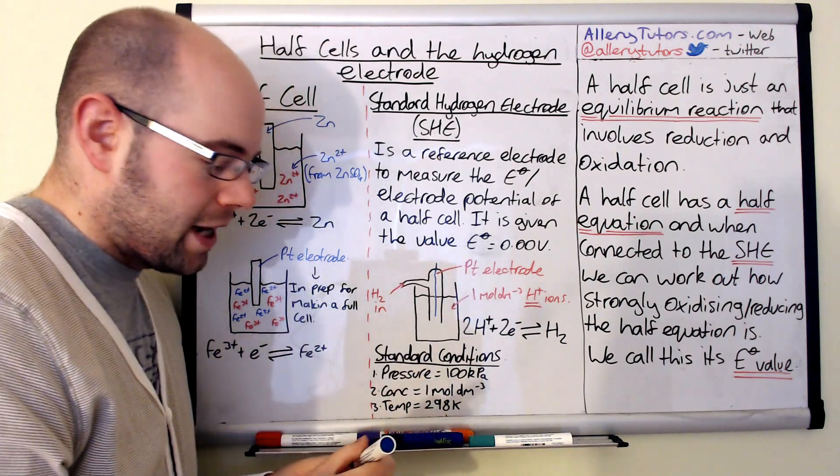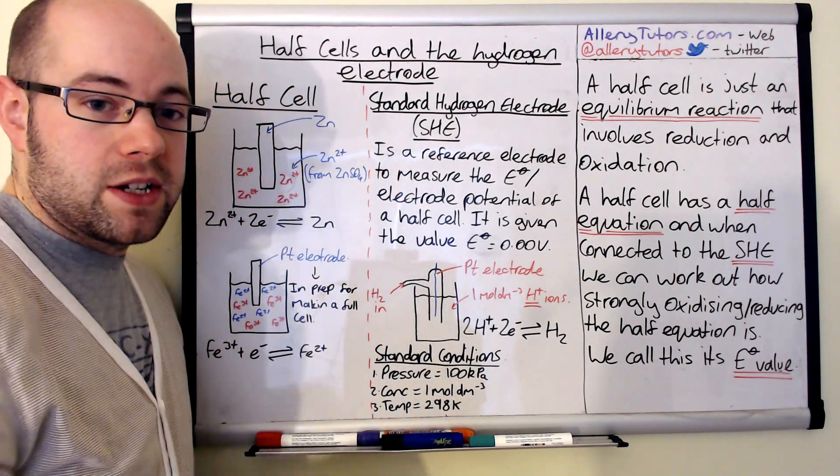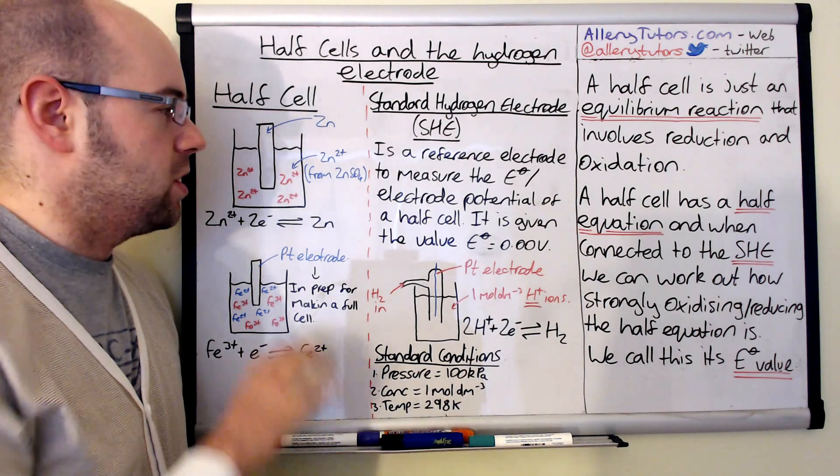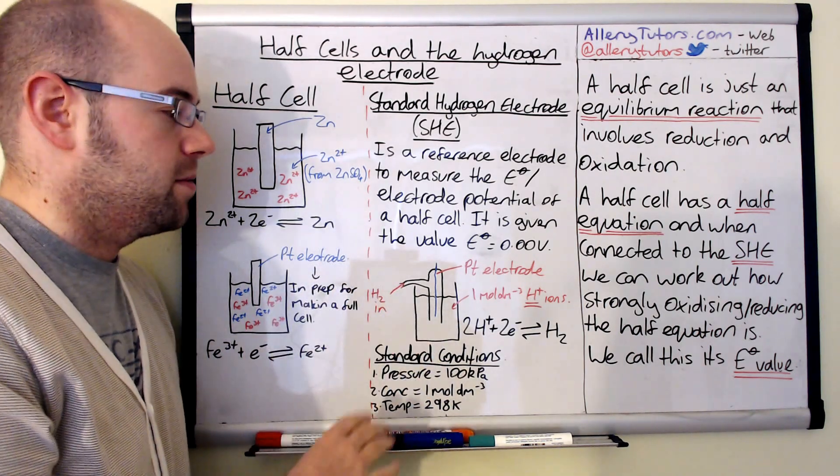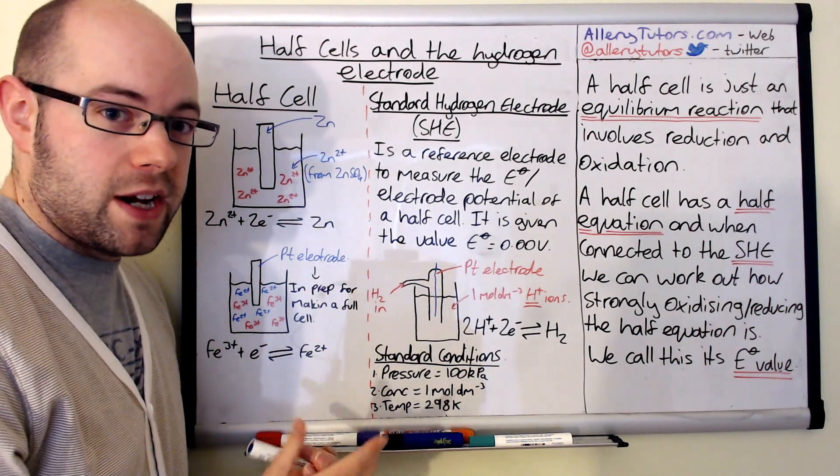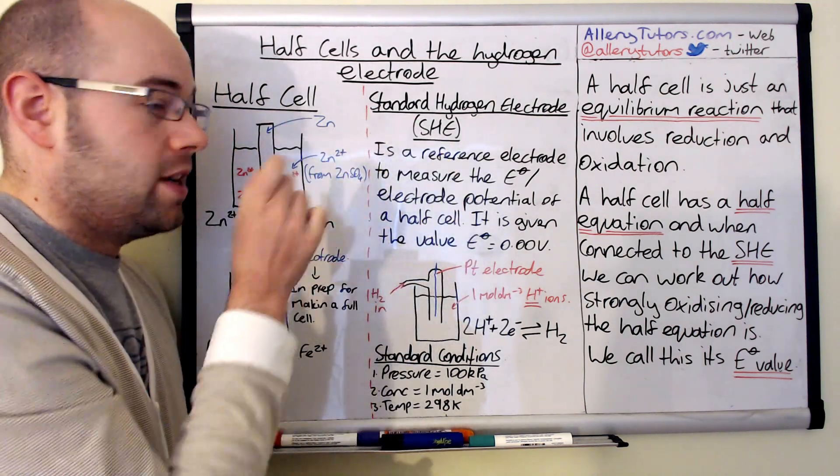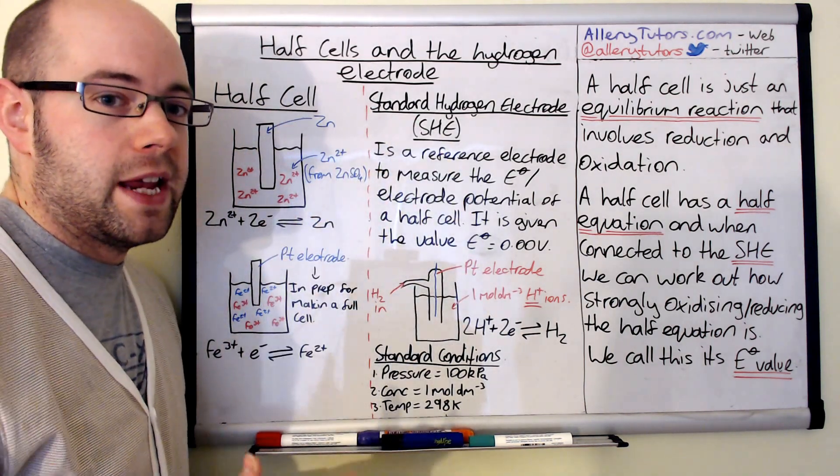Effectively, what we've created is a circuit. We put a salt bridge in between as well, but there are more videos that talk about the setup. Effectively, we create a circuit. The voltmeter will sit between the wire, between this and this, and it will show us a number. We call that the E⁰ value.